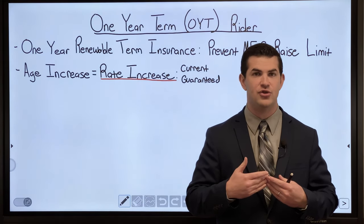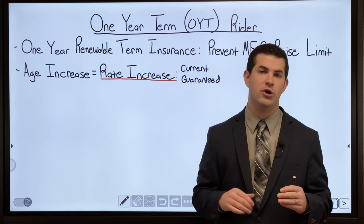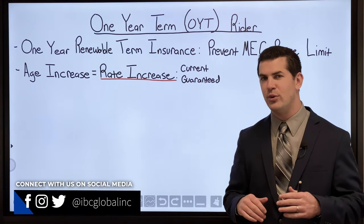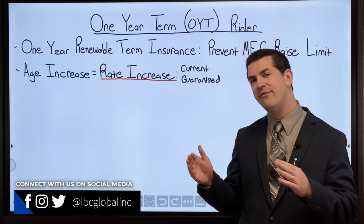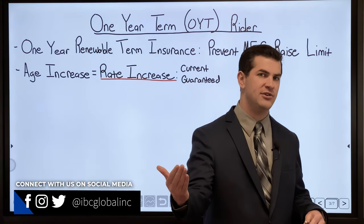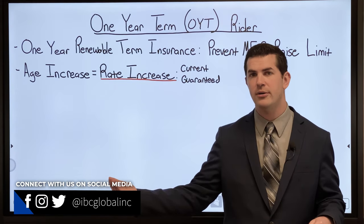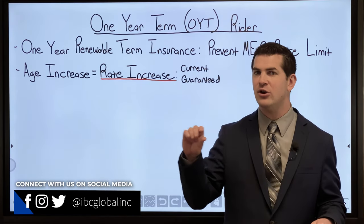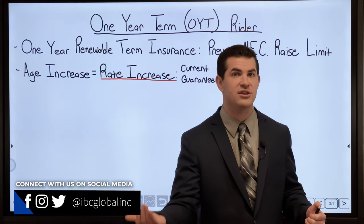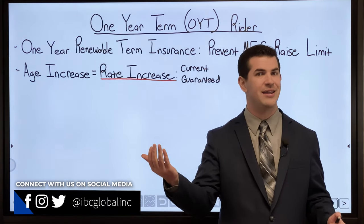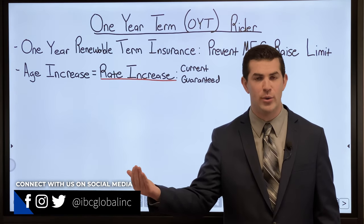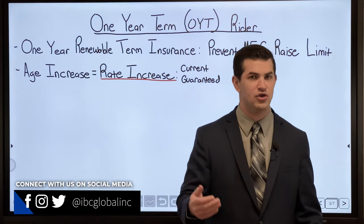You'll see 'current' and 'guaranteed' rates. When you buy a policy with this term rider attached, the company has their current charges for the term component. However, they do have a guaranteed charge — meaning if they want to raise the cost, they can do that. It doesn't happen often, but they can, and I want to be aware of that as a consumer.